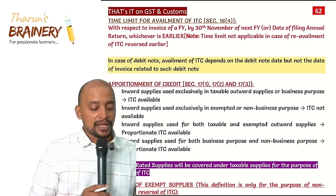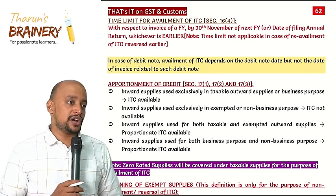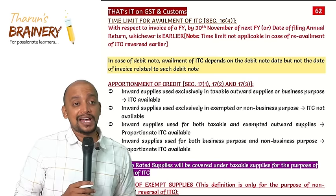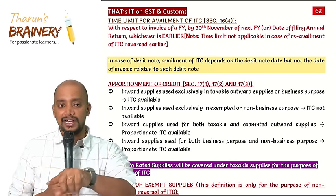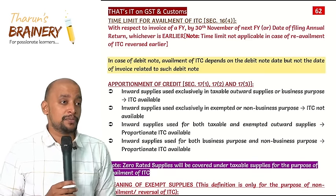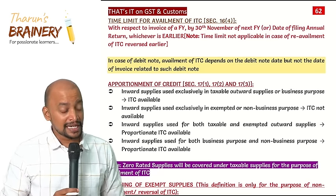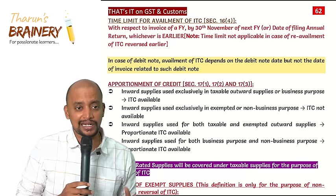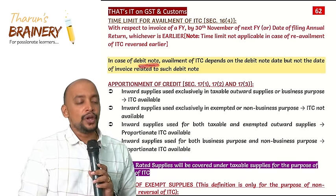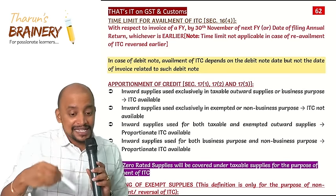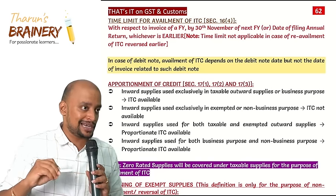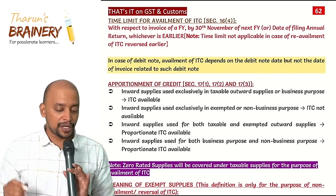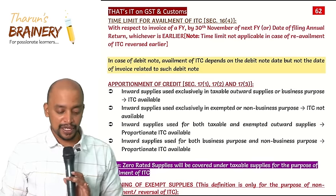Section 16 subsection 4 - Time limit for availment of ITC: 30th November of the succeeding financial year or the date of filing the annual return, whichever is earlier. This same time limit applies for: time limit for issuance of credit note; rectification of GSTR-1, GSTR-3B, and GSTR-8. This time limit is not applicable in cases of re-availment of ITC - i.e., re-availment under Section 41 (supplier not filing 3B by September 30th) and re-availment after making payment to supplier after 180 days. In case of debit notes, the availment of ITC depends on the debit note date, not the invoice date related to such debit note.